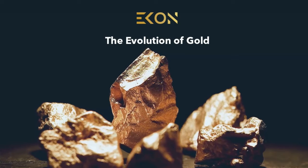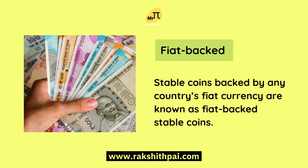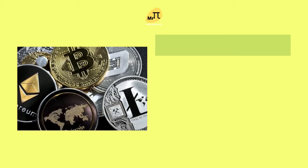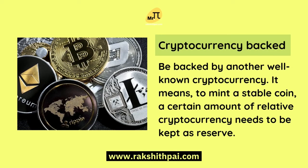Examples of commodity-backed stablecoins include Gold Mint and eCON Gold. Fiat-backed stablecoins are backed by any country's fiat currency — examples include Tether, EURS, and Gemini Dollar. Cryptocurrency-backed stablecoins are backed by another well-known cryptocurrency, meaning a certain amount of that cryptocurrency must be kept in reserve to mint the stablecoin.